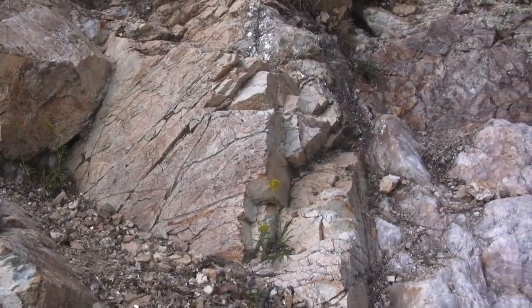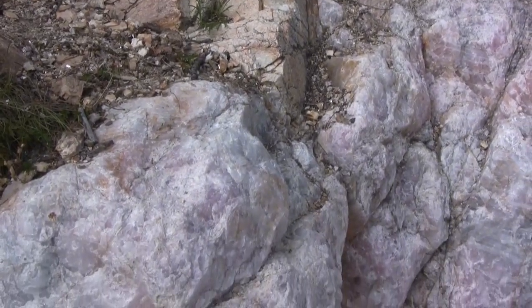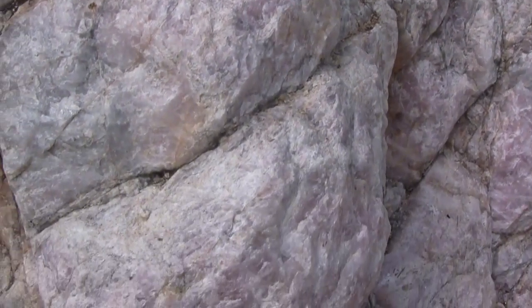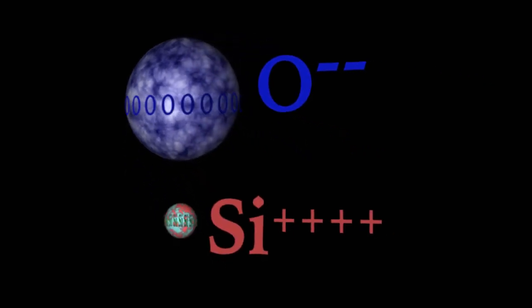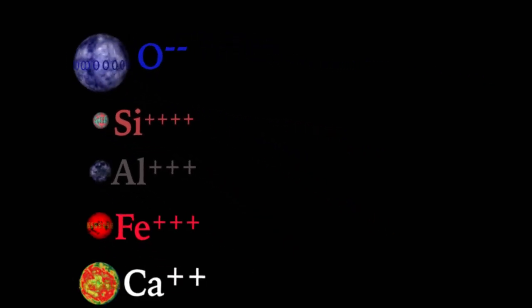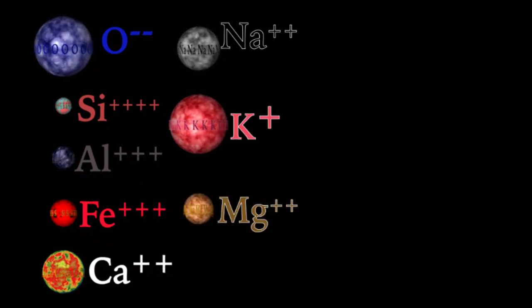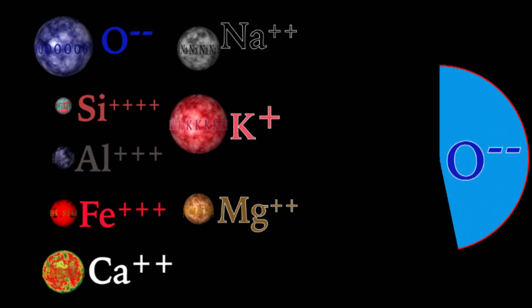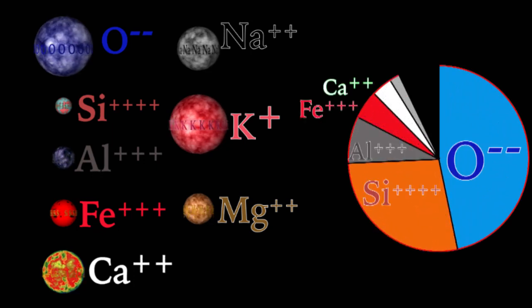We organize minerals by their chemistry, and it should be noted that the eight most common elements in the Earth's crust in order by weight percent are oxygen, silicon, aluminum, iron, calcium, sodium, potassium, and magnesium. Just those eight elements make up about 98.5% of all the elements in the Earth's crust, so they will dominate our minerals' chemical formulas.